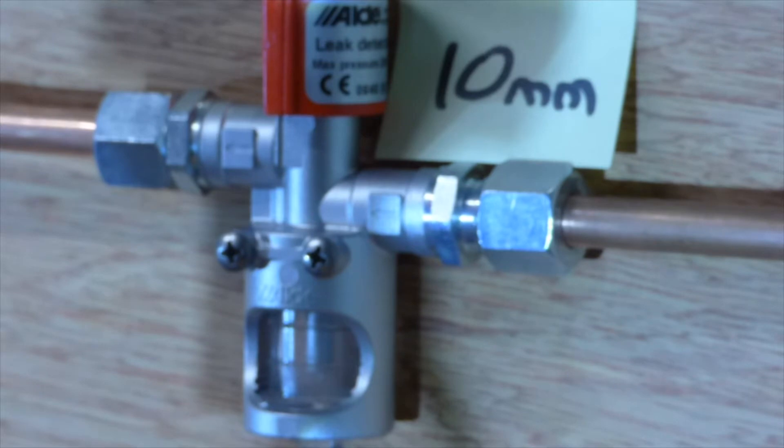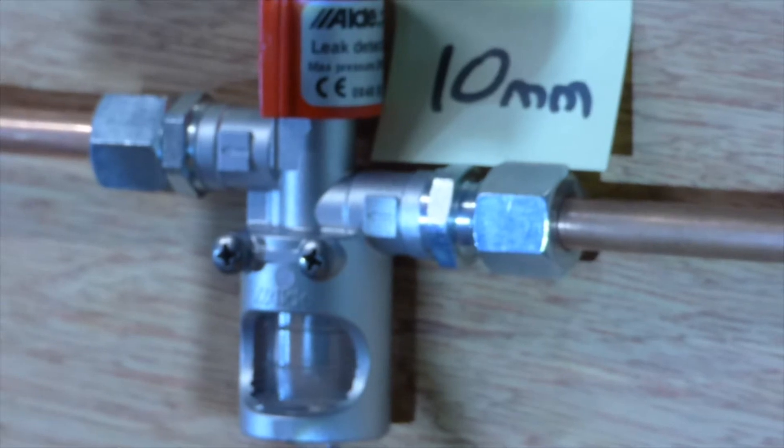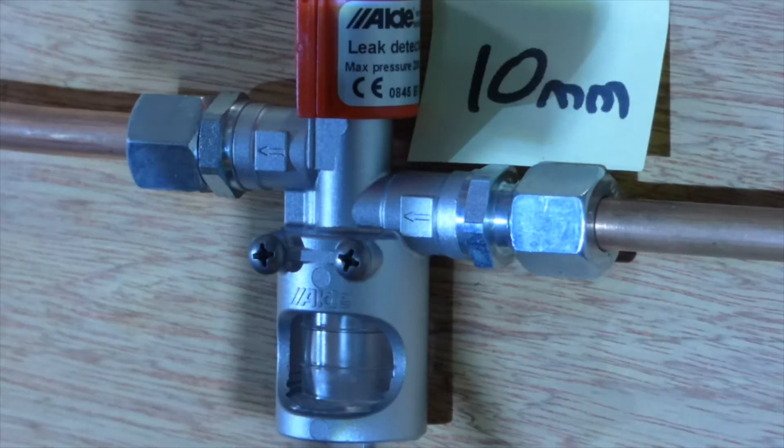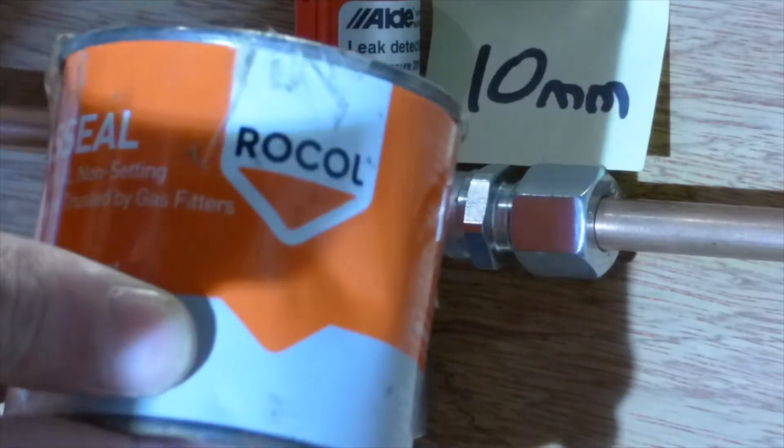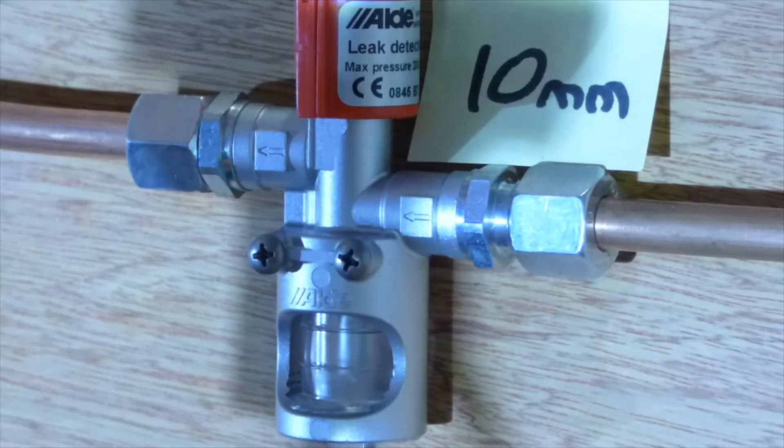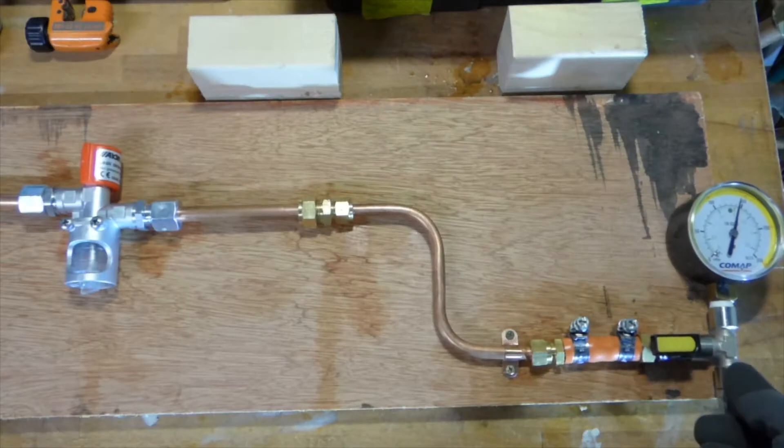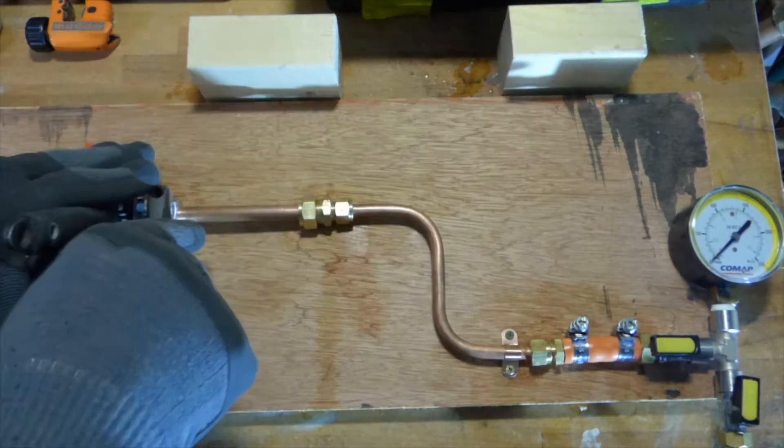Right now, there's no liquid at all in the bubble tester. And there's no sealant on the olives either. Over the last 24 hours, I pumped pressure to 150 millibar and it lost all of its pressure overnight from 150 down to zero.